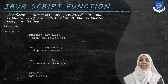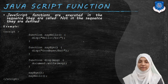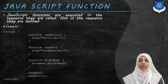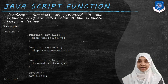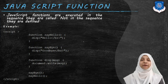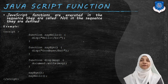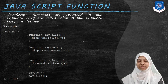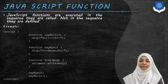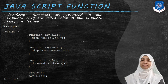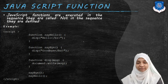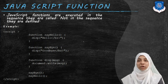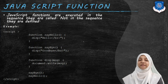Before we understand callback functions, let us revise simple JavaScript functions. A function performs some specified tasks and these functions are always executed in the order in which they are called, not in the order in which they are defined. In the given example presented on screen, there are three functions: sayHello, sayBye, and display. Within sayHello we have made a call to display, and within sayBye we have also made a call to display.